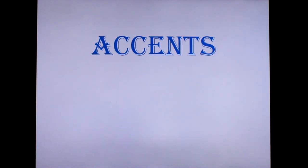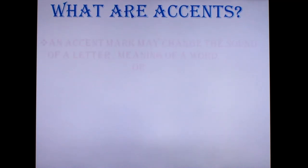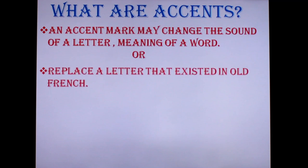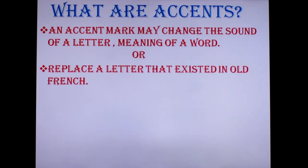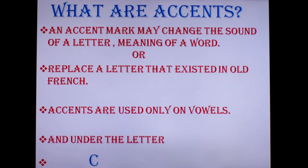Coming up next are the accents — the accents in French. Let us learn in detail the accent marks used in French. An accent mark may change the sound of a letter, the meaning of a word, or replace a letter that existed in old French. Accent marks are used only on vowels and under the letter C. That is the only exceptional consonant where we use an accent mark. In French, we use five different types of accents or diacritics.